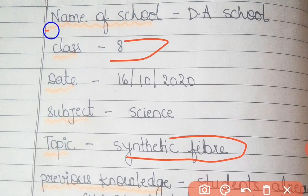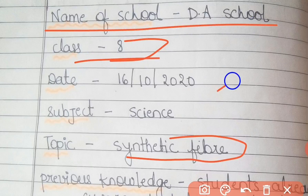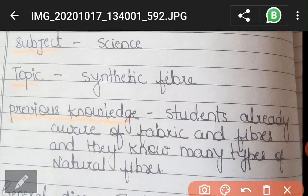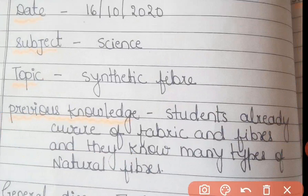First, you have to write the name of your school, then class is 8, date, subject is Science, and topic is Synthetic Fiber. For previous knowledge, we have to write what the student is already aware of. Students are already aware of many types of fibers and fabrics because this topic — fiber and fabric — was covered in Class 7. They already know about many types of natural fibers and how we can obtain fiber and fabric.